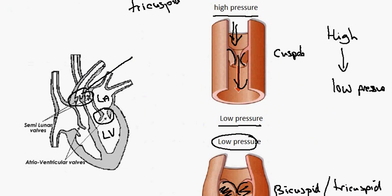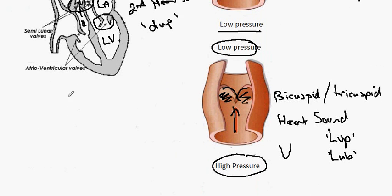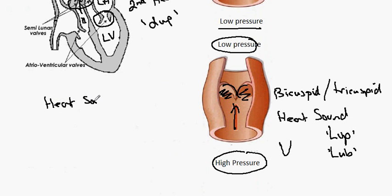The semi-lunar valves here work in exactly the same way. When high pressure is here in the ventricles, it forces blood through into the arteries. But when the heart relaxes, blood flows backwards closing the semi-lunar valves, making the second heart sound, sometimes described as dup. This gives heart sounds of lup dup. This is the closure of the atrial ventricular valve and this one is the closure of the semi-lunar valve. These are the sounds that one hears when you hear your own heart beating.